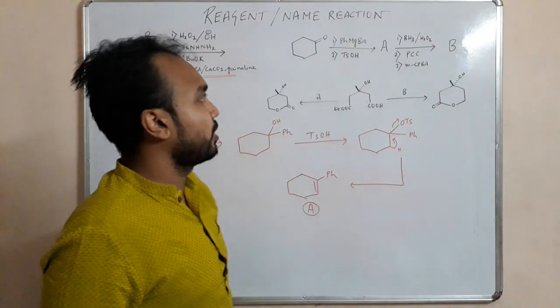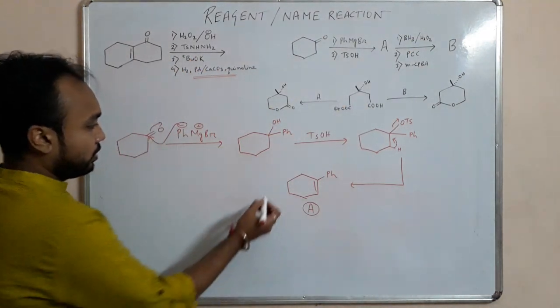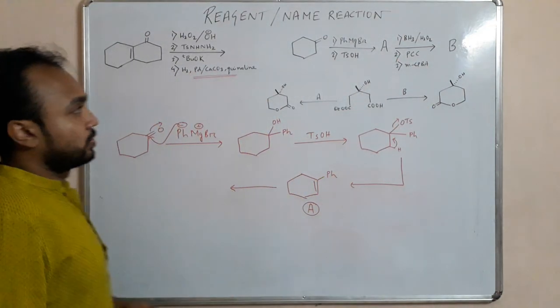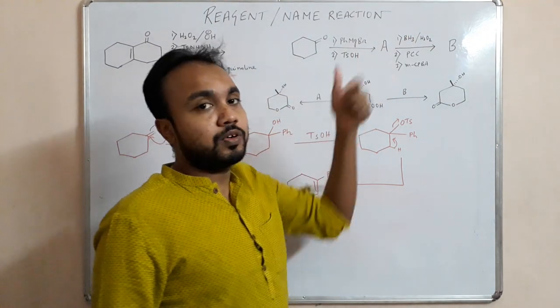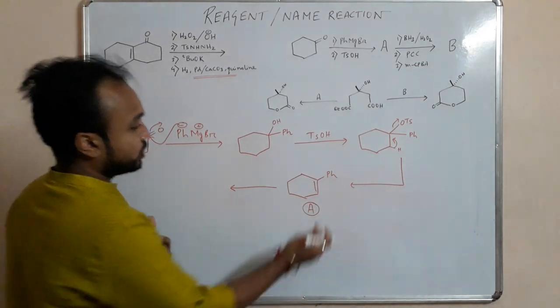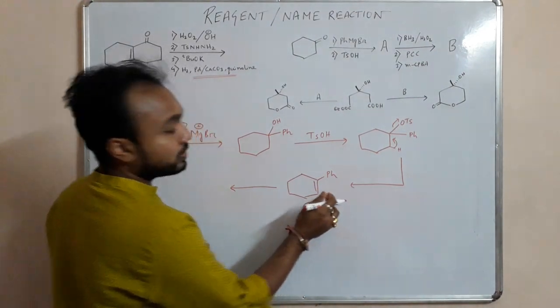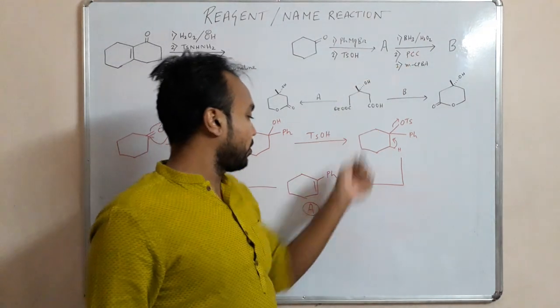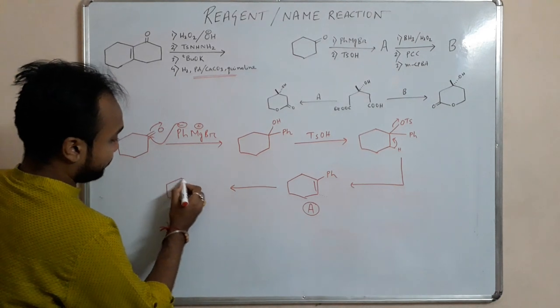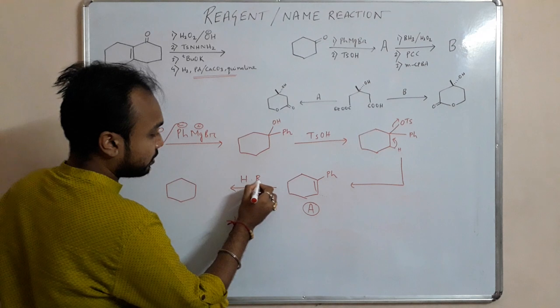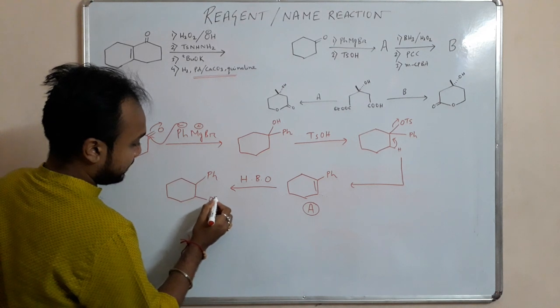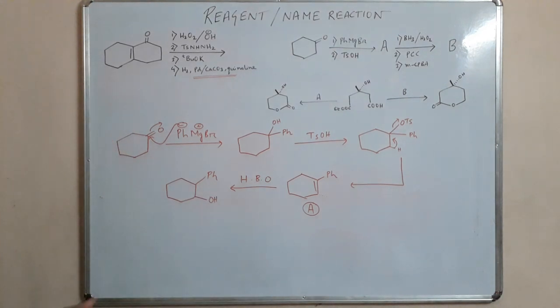To form this product, this alkene type product. So A will be this one, this is your A. Then we are given diborane or BH3 in presence of H2O2, what will happen? It undergoes hydroboration oxidation reaction. So as you know that in hydroboration oxidation, this boron prefers a less hindered site.